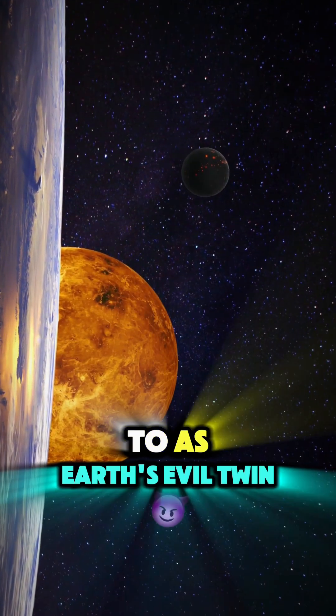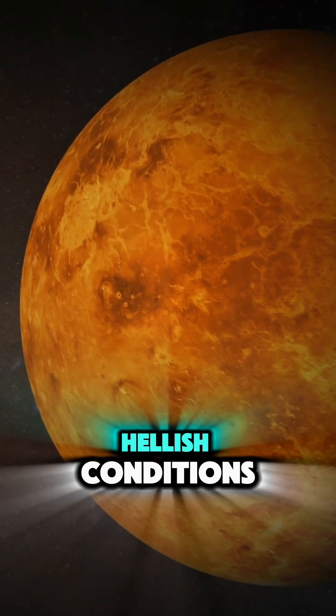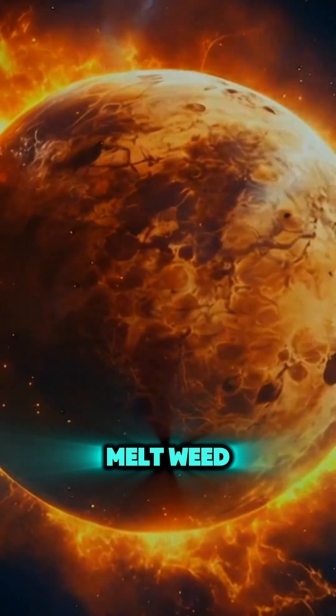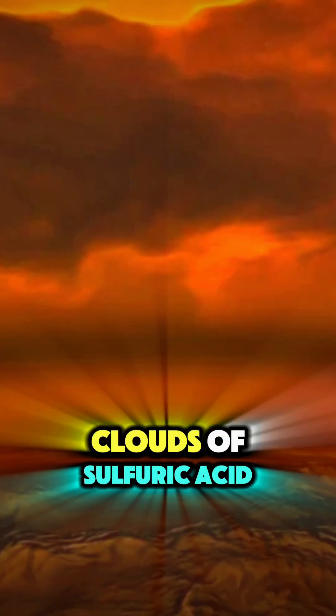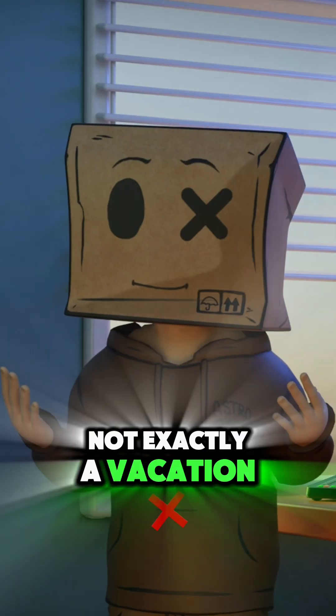Venus is often referred to as Earth's evil twin, known for its hellish conditions. Temperatures hot enough to melt lead, crushing atmospheric pressure and clouds of sulfuric acid. Not exactly a vacation spot, right?